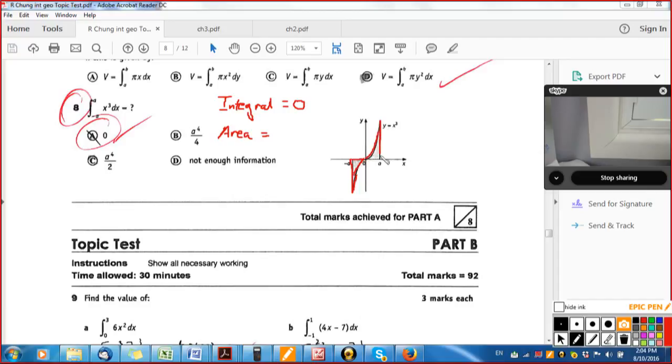Yep. So the area between negative A and A is going to be that area plus that area, which is what you said before. It's going to be double, double the area from zero to A, right? So that's two times the area from zero to A, or x cubed dx.